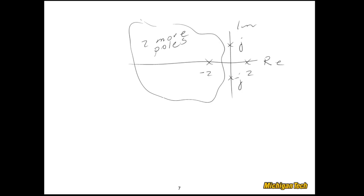To recap: we looked at two special cases of the Routh array. The first is where one element of the first column is zero, and the second is where an entire row is zero. In both cases we know the system will be unstable with poles outside the left half plane. We then had fixes to analyze those cases further — determining how many poles are not in the left half plane, and being able to find poles on the imaginary axis by introducing the auxiliary equation and solving it.